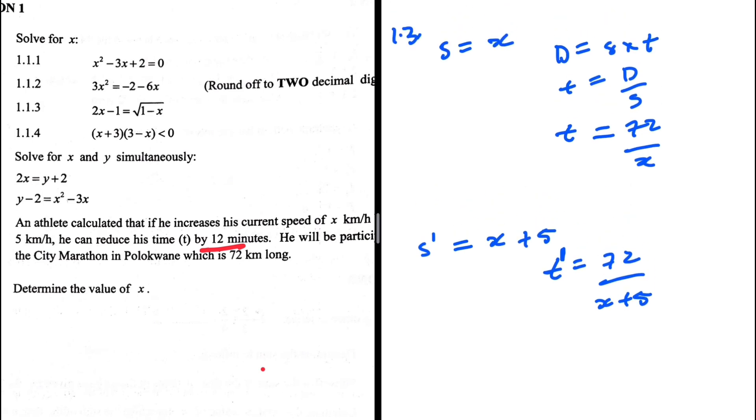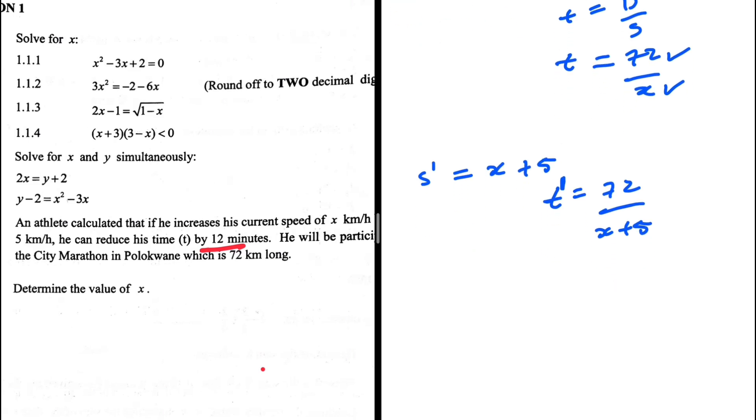So t minus t prime should give us 12 minutes. But our distance is in kilometers and our speed is in kilometers per hour, so we need to convert that 12 minutes to hours. So 12 minutes divided by 60, we convert it into hours.